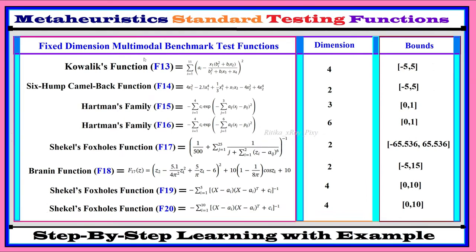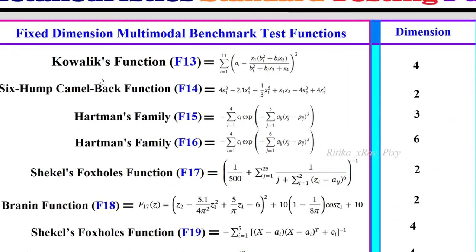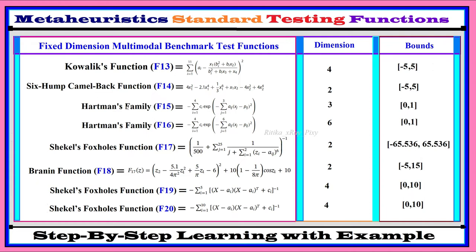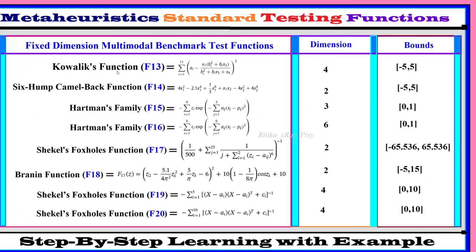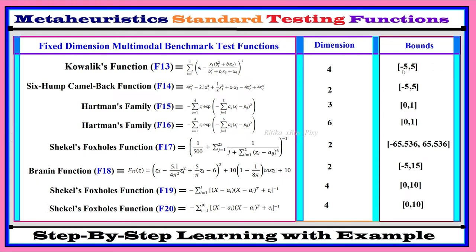Next, we have fixed dimension multimodal test functions. We can use fixed dimension test functions to verify algorithm performance — including accuracy, speed, and stability. We can also use them to solve constraint optimization problems. For example, the welded beam design optimization problem has four design variables, so the dimension is fixed at four. The bounds for F13 are minus 5 as the lower bound and 5 as the upper bound.